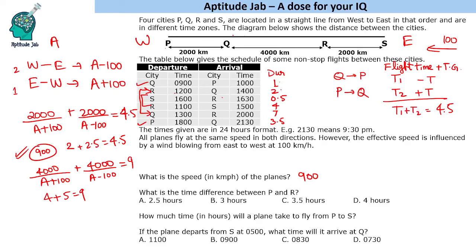Now we find the time differences between consecutive cities. For P to Q: the effective speed is 800 km/h, so actual flight time is 2000/800 equals 2.5 hours. But the observed time is 3.5 hours, so Q is 1 hour ahead of P. Verified in reverse: Q to P at 1000 km/h takes 2 hours actual, but shows as 1 hour, confirming Q is 1 hour ahead of P.